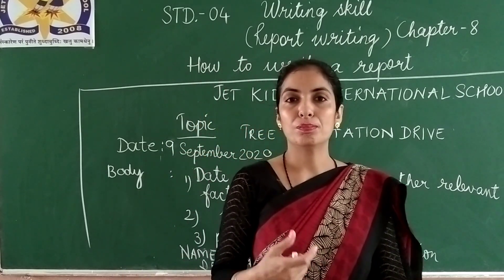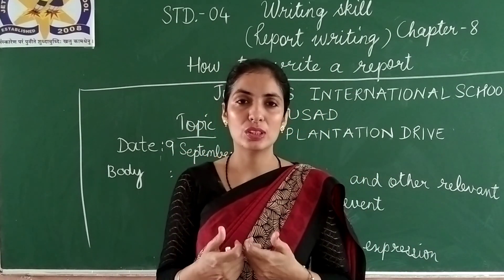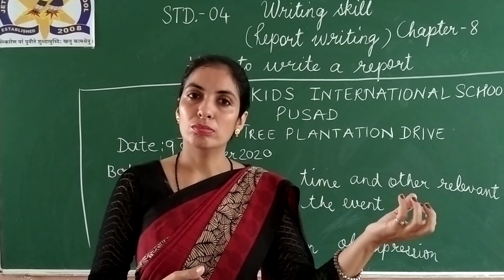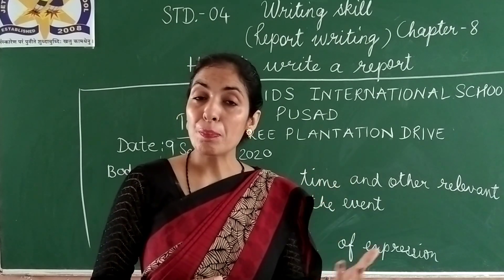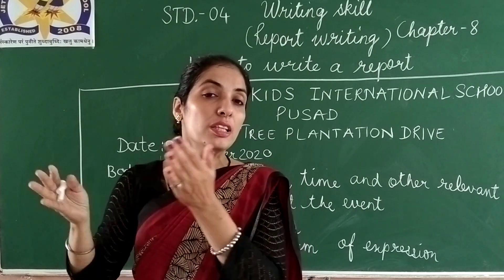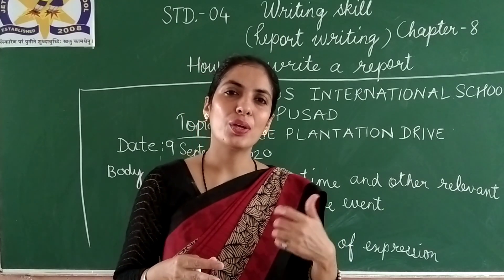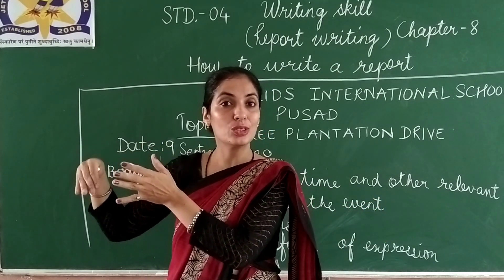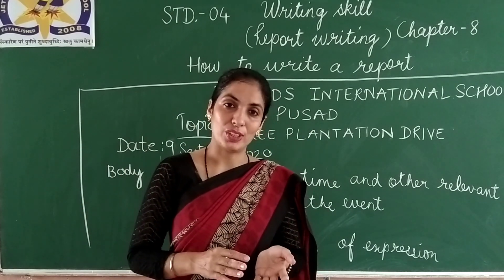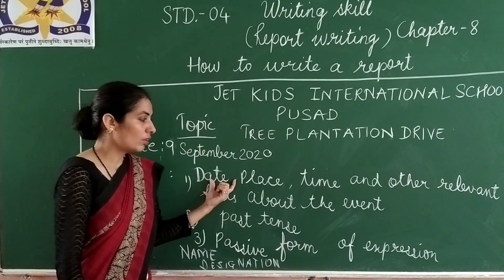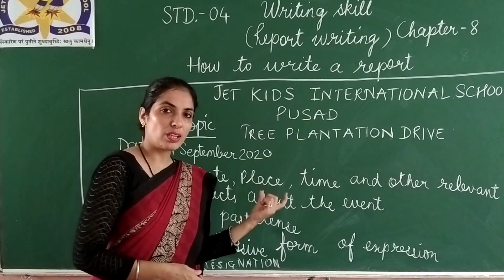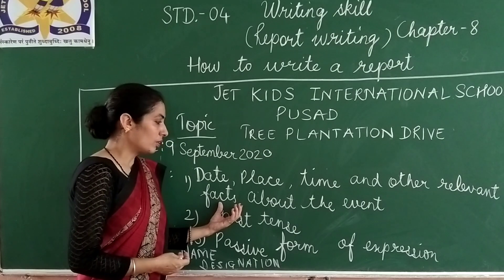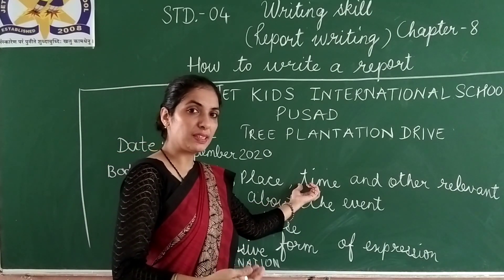What does passive form mean? We cannot say 'I' or 'we' — always keep in mind that it should be in past tense form. The focus is on the objects instead of the subjects. For example: 'The event took two hours,' or 'many participants were there,' or 'the students were divided into groups.' So: the tree plantation drive was organized by our school on 7th September in the neighborhood, and it took place in the morning hours.